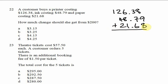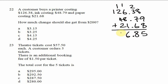8 + 9 = 17, plus 8 = 25: write 5, carry 2. 6 + 7 = 13, plus 3 = 16, plus 2 = 18: write 8, carry 1. Bring down the decimal point. 1 + 8 = 9, plus 6 = 15, plus 1 = 16: write 6, carry 1. 2 + 4 = 6, plus 2 = 8, plus 1 = 9. Carry down the 1.